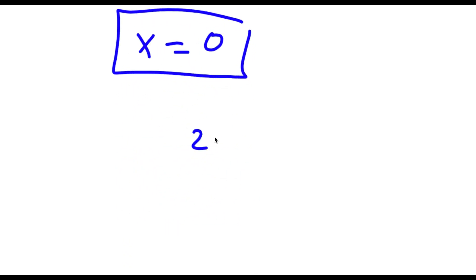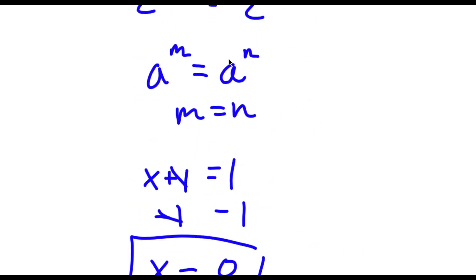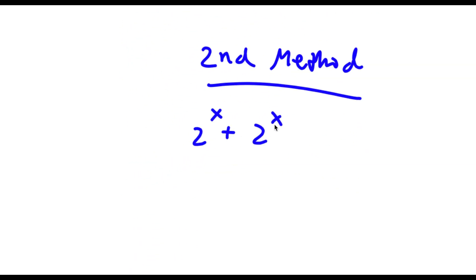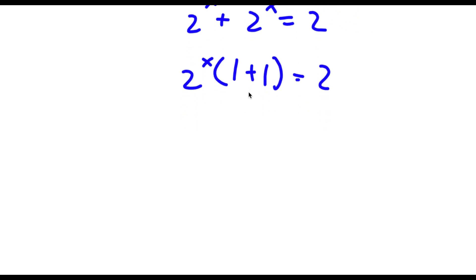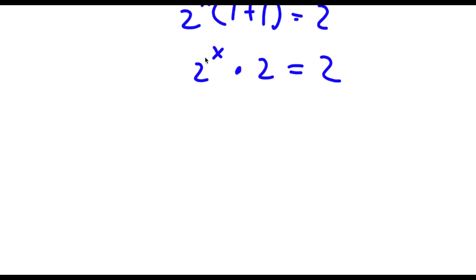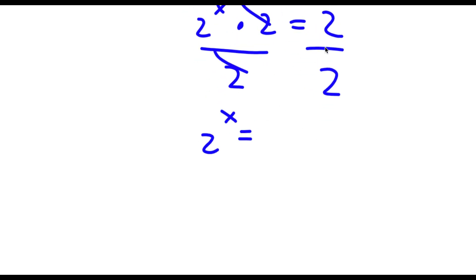Now here's another method of doing this. So I have 2 to the power of x plus 2 to the power of x is equal to 2. I'm going to do the same thing at the start — factor out 2 to the power of x. So I have 2 to the power of x times 1 plus 1 is equal to 2. Simplifying the parentheses: 2 to the power of x times 2 is equal to 2. Now instead of multiplying, I'm going to divide both sides by 2. These two cancel out, and I'm left with 2 to the power of x is equal to 1.